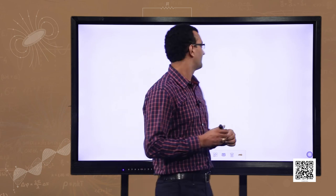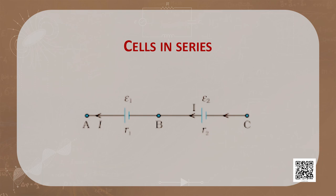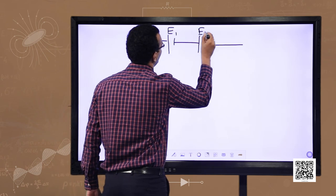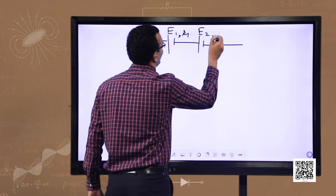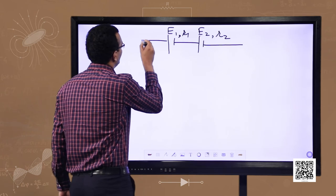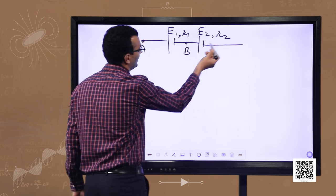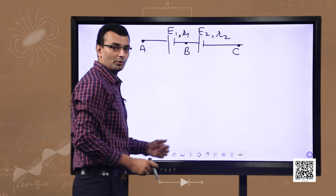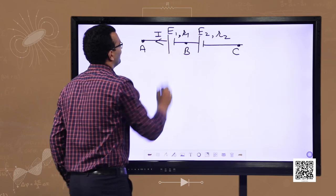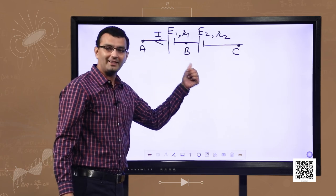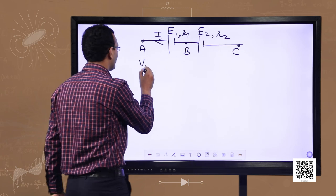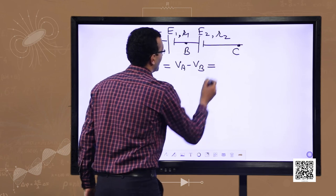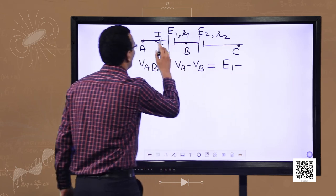Let us consider the series combination first. We have two cells connected in series whose EMFs are E1 and E2 respectively, and their internal resistances are R1 and R2 respectively. The terminals of cell E1 are A and B, and the terminals of cell E2 are B and C. If we consider the current through this combination is I and we write the equation for the potential difference across cell E1, we obtain the potential difference VAB equals VA minus VB, which equals E1 minus I·R1.